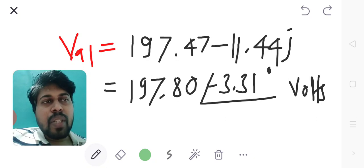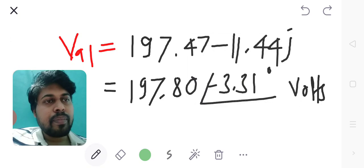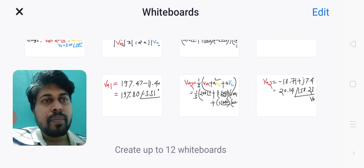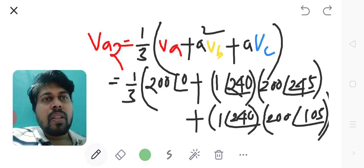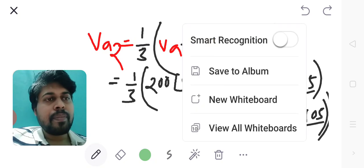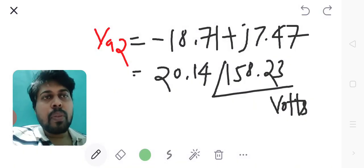For VA2, VA2 equals 1/3 times (VA + A²×VB + A×VC). Substituting the data in this formula, I will get